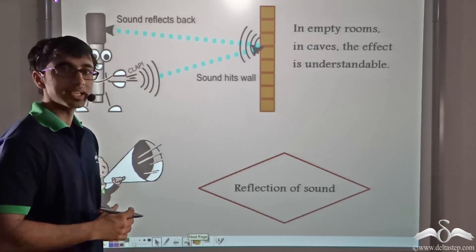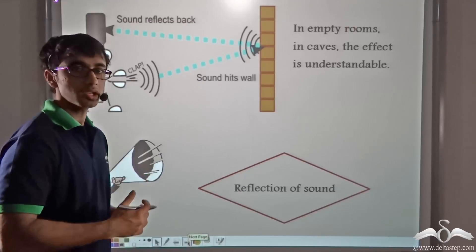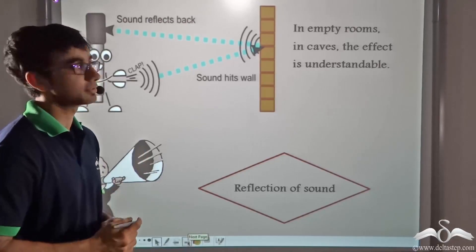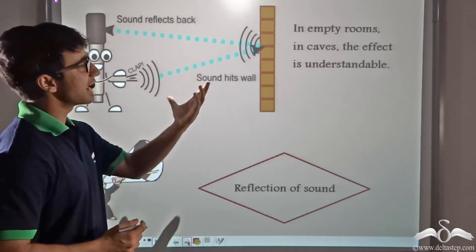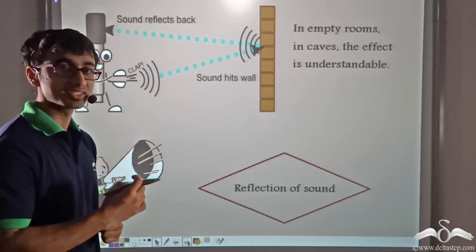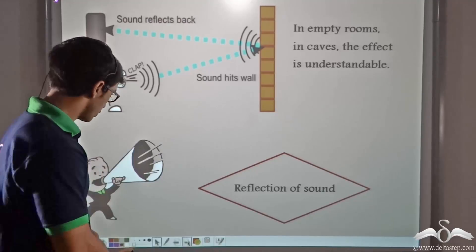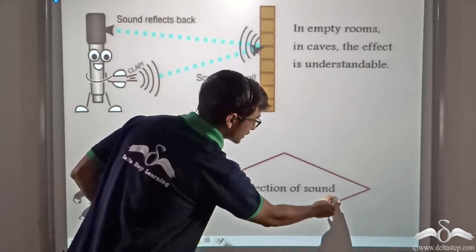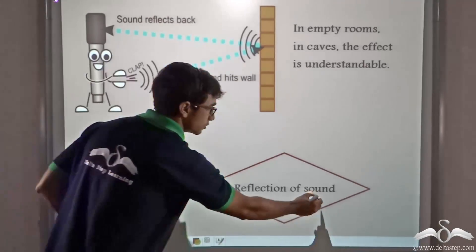When sound hits an obstacle like a wall, it hits the wall and it bounces back. For example, in empty rooms and caves, this effect will be understandable. So this phenomenon is known as the reflection of sound.